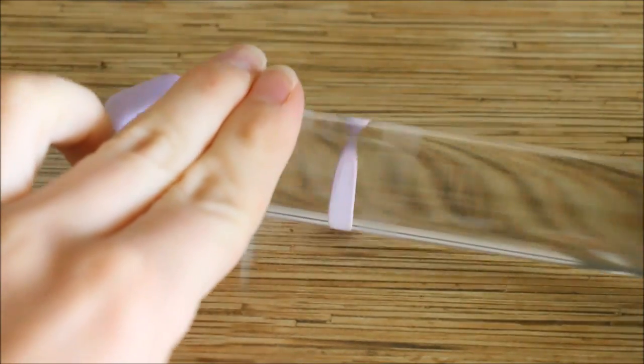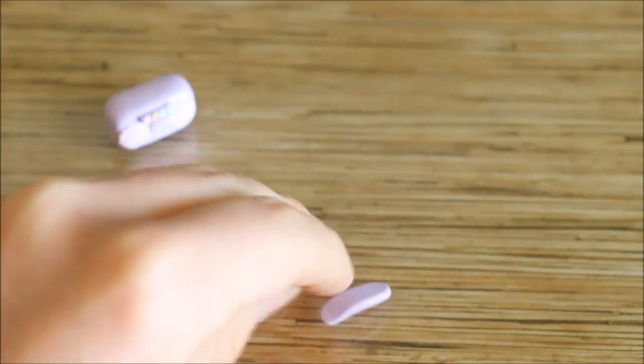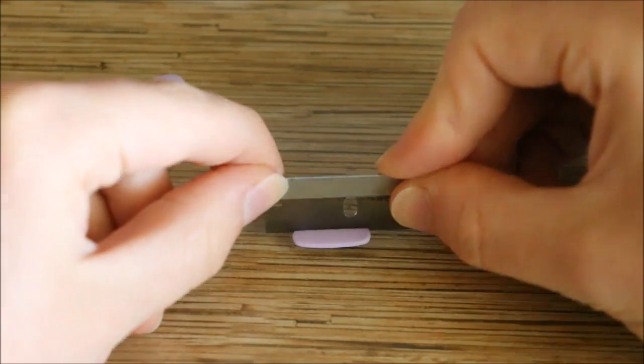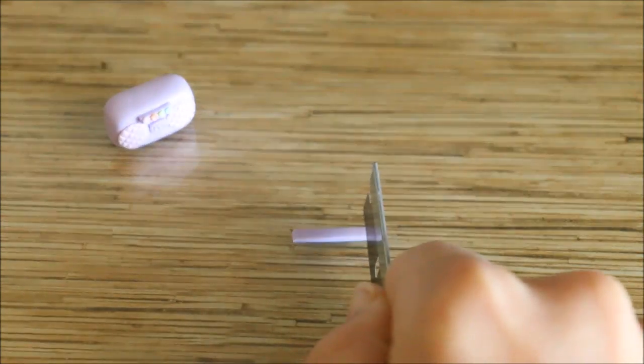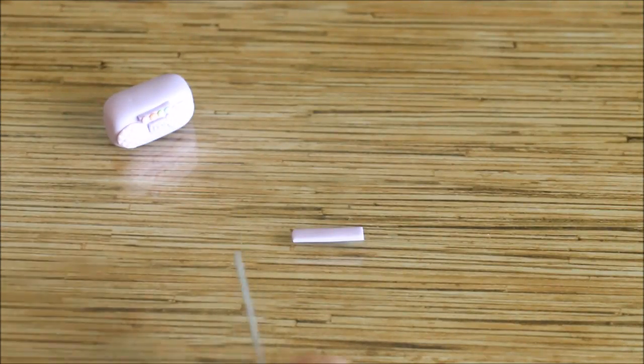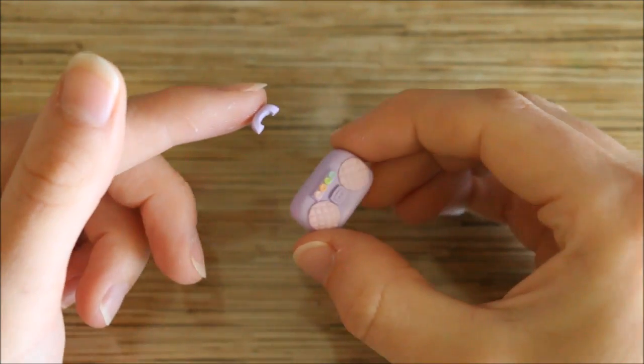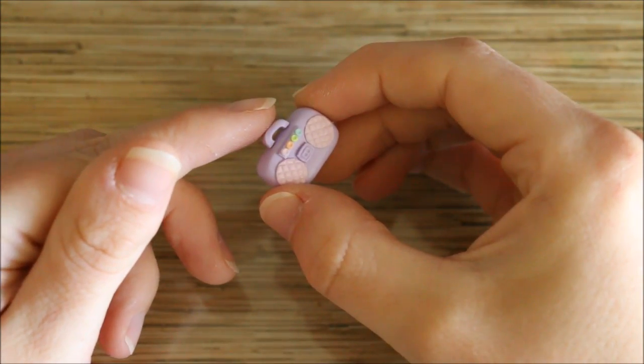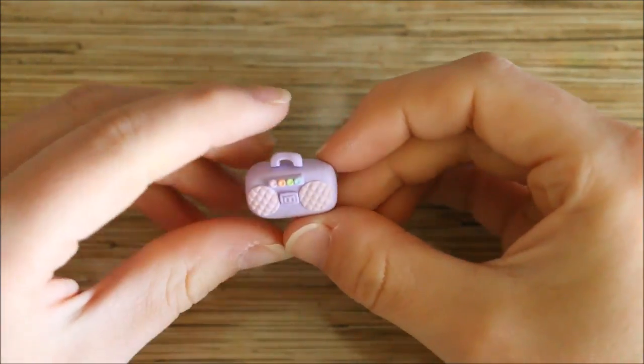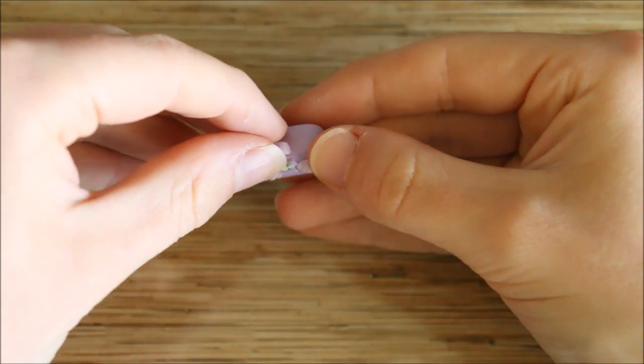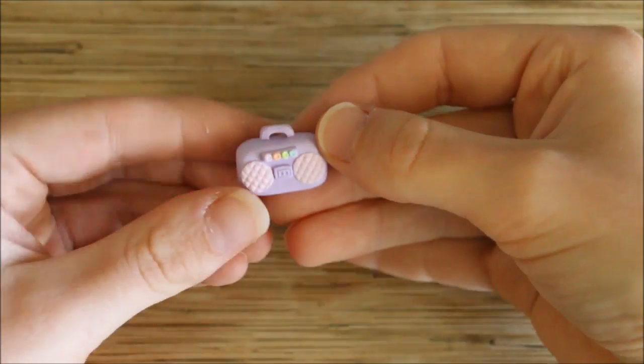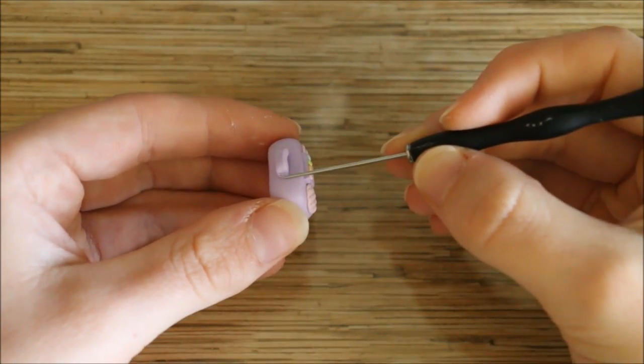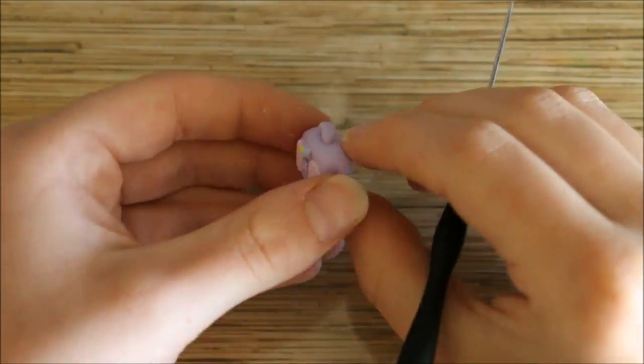Once again I took some more of my purple base color to create the handle. I rolled it out and then used my blade to cut away the excess clay. You can then curve down each of the ends and position it on top of the charm. To keep it secure and join it on properly I blended down the edges using my needle tool.